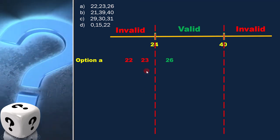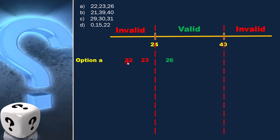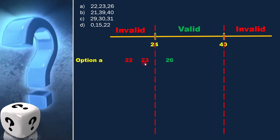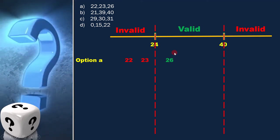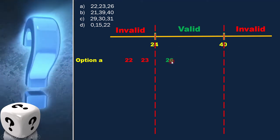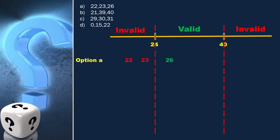In this option, 22 and 23 are in invalid range and 26 is in valid range. Therefore, this option is not the answer.